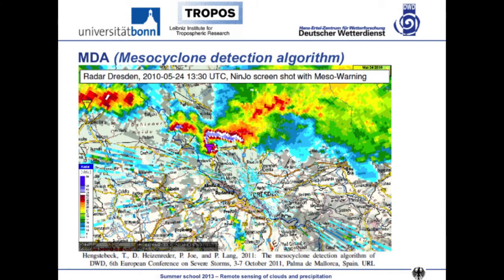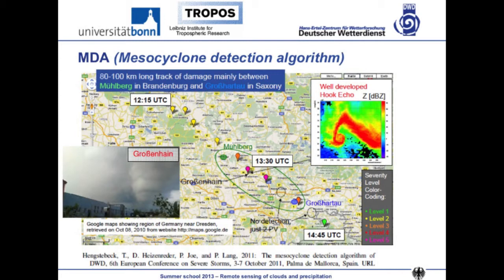In another example, you can see the 2D radar reflectivity field with a nice hook echo, and a purple triangle indicating the mesocyclone detection algorithm detected a mesocyclone. Across the whole day, colorful points show where the algorithm detected a mesocyclone — first detected at 12:15 and tracked for two hours later. Within the green circle is where a tornado track was actually observed at the ground. The algorithm nicely detected the feature, tracked it, and showed it increasing in severity — purple is stronger compared to yellow — and then decreasing again.